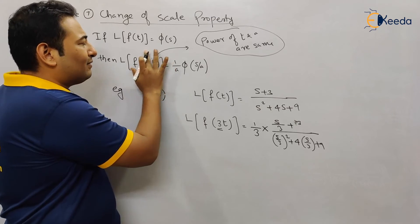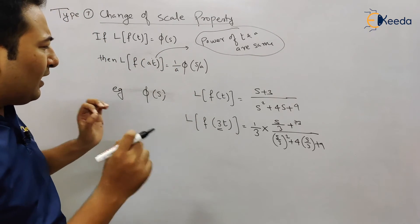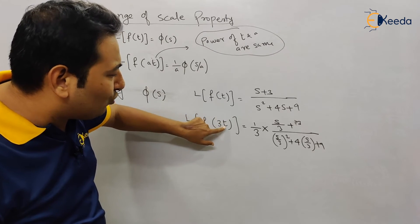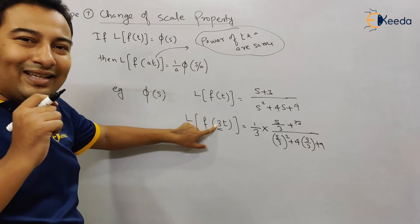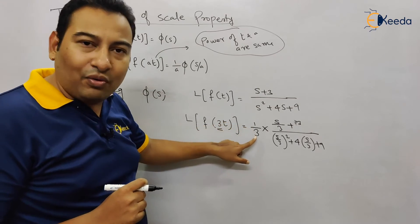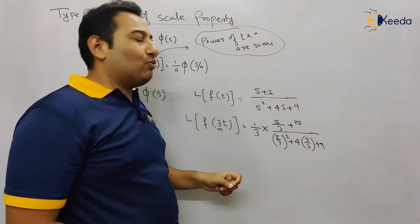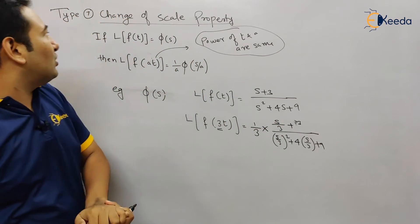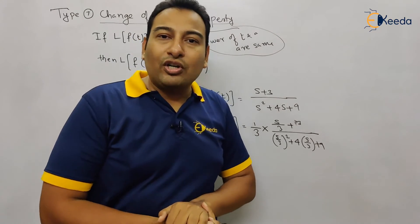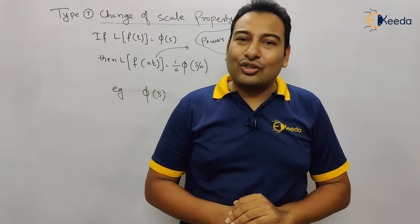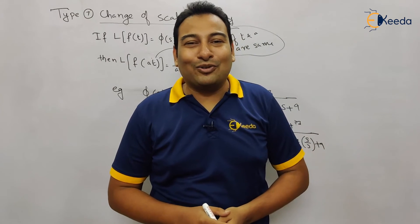We're going to discuss this in the next videos. As of now, this is t raised to 1, 3 raised to 1. T is multiplied with 3, 3 is the scaling factor, so it will be 1/3 and s will be replaced by s/3. So this is your change of scale property. Hope you understood. In the next videos, we'll discuss examples on this particular property. Thank you.